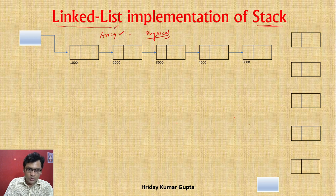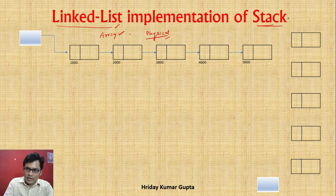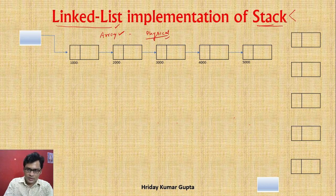We have seen array implementation; now linked list. We can also say: stack using static memory, static allocation — static representation means using array, and dynamic representation means using linked list.